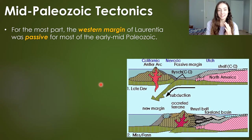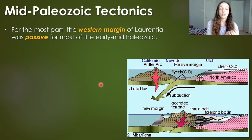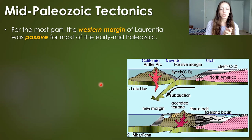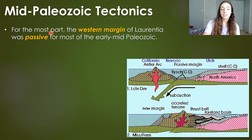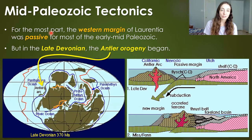Laurentia also had a western margin. What was going on there? As we know today, there are many mountains along the western margin of the U.S. During the early to mid-Paleozoic, Laurentia was mostly just a passive margin — continental crust that thinned to oceanic crust with no tectonic activity. But in the late Devonian began the Antler orogeny: another mountain building event, now on the western margin of Laurentia rather than the eastern part.